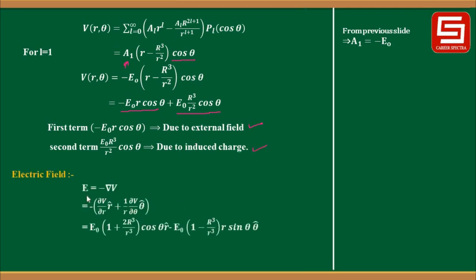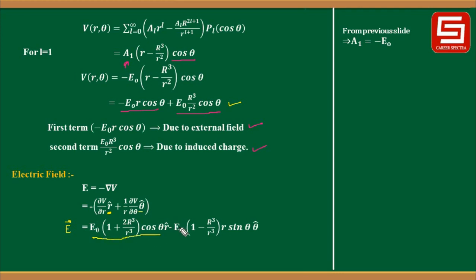Now, the electric field E = −∇V, and since V is a function of r and θ: E = −[∂V/∂r r̂ + (1/r)(∂V/∂θ) θ̂]. This has a radial component and a tangential component. Differentiating V with respect to r and θ, the electric field is: E = E₀(1 + 2R³/r³) cosθ r̂ − E₀(1 − R³/r³) sinθ θ̂.